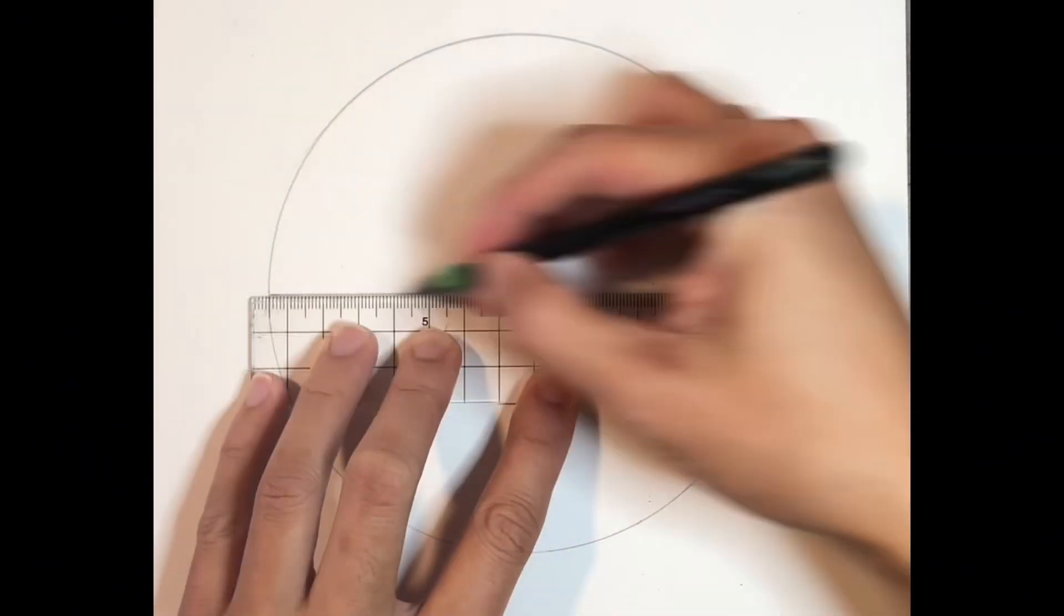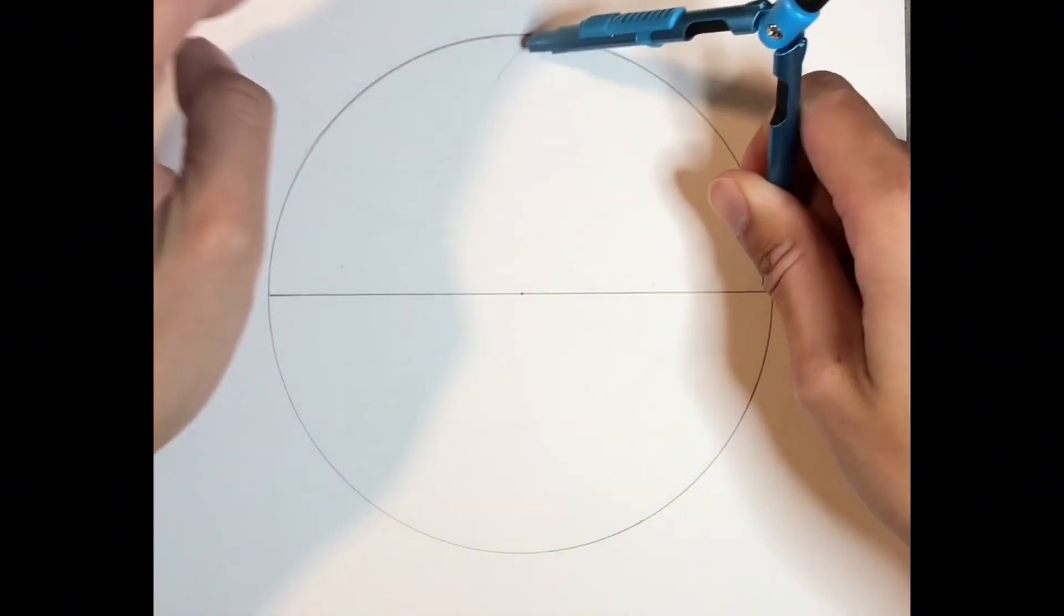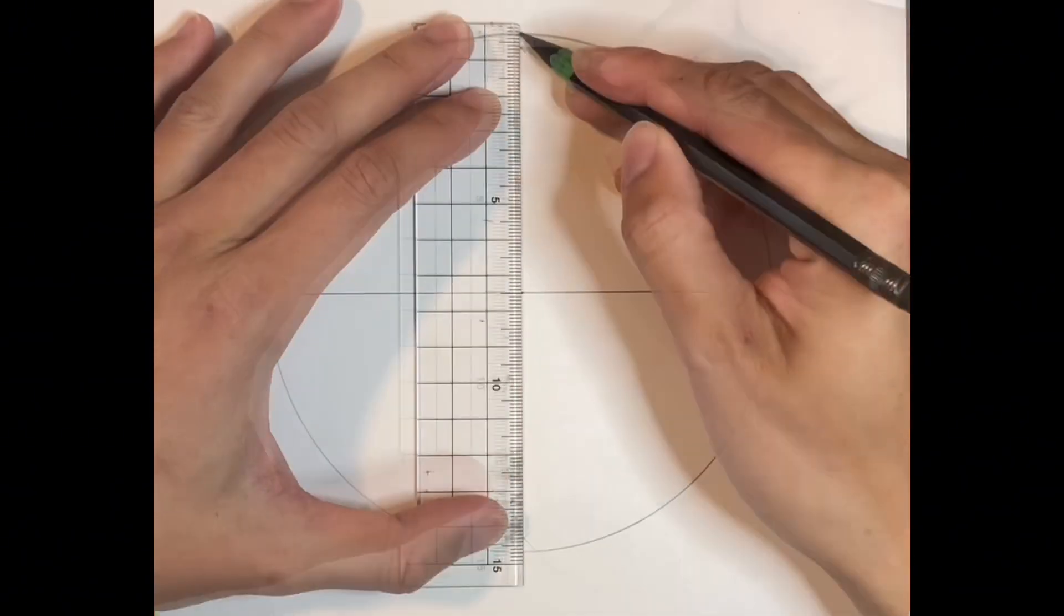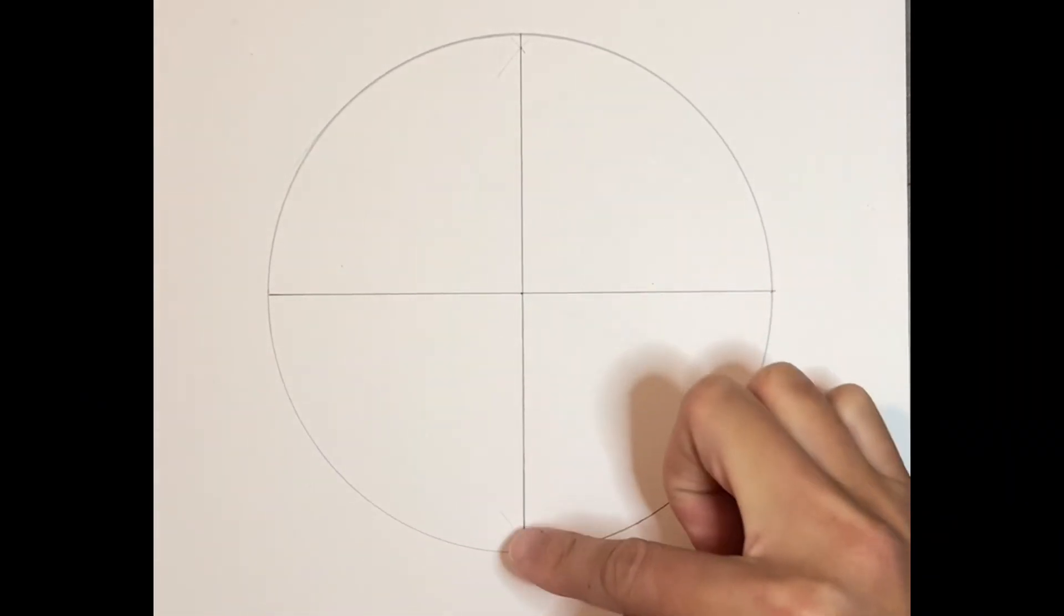Now let's draw a horizontal line. Now we're going to divide this line. Now we're going to divide this into four.